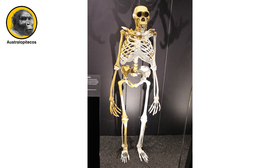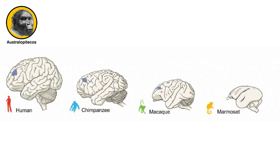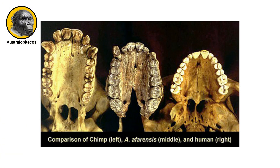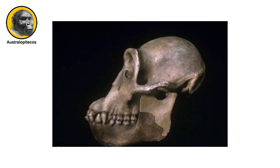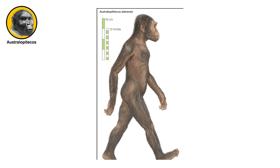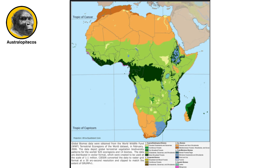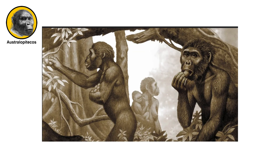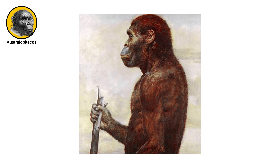They were similar to modern humans in that they were bipedal — that is, they walked on two legs. But, like apes, they had small brains. Their canine teeth were smaller than those found in apes, and their cheek teeth were larger than those of modern humans. Australopithecines were bipedal beings of short stature; they did not exceed 1.4 meters. They lived in tropical regions of Africa, feeding on fruits and leaves, and were the first group to use an opposable thumb to grasp and handle tools.